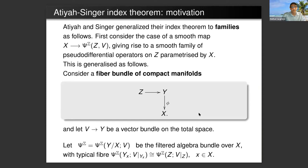Atiyah-Singer generalized the index theorem to families as follows. You first consider the case of a smooth map from base manifold X to pseudodifferential operators on Z, and this gives a smooth family of pseudodifferential operators on Z parametrized by X. But it turns out there's a natural generalization. You can consider a fiber bundle of compact manifolds, so Z goes to Y goes to X. The families are twisted maps.